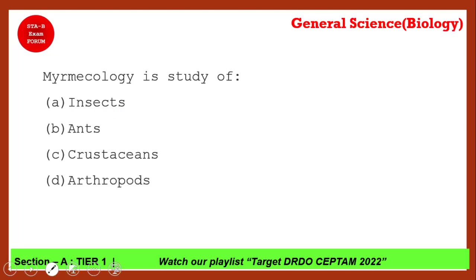Myrmecology is the study of which of the following? Try to see the options. We just saw that entomology is the study of insects. The correct answer for this question is ants — myrmecology is the study of ants.